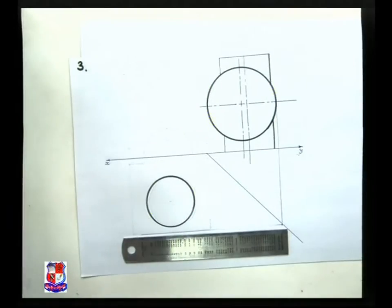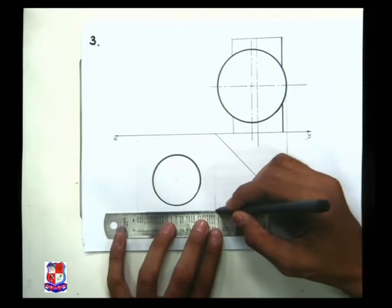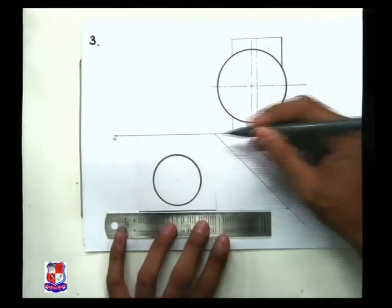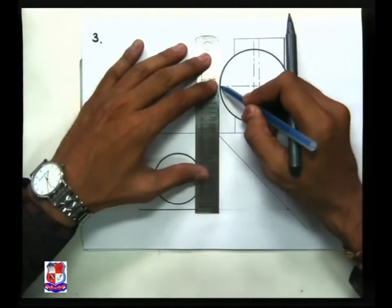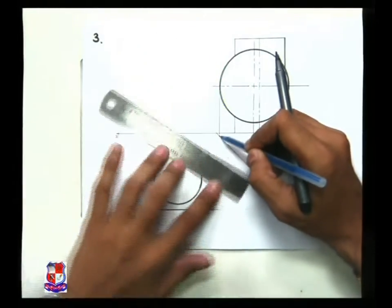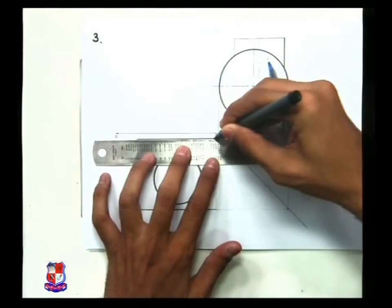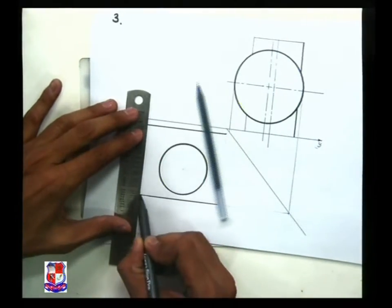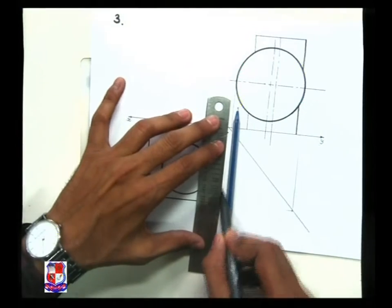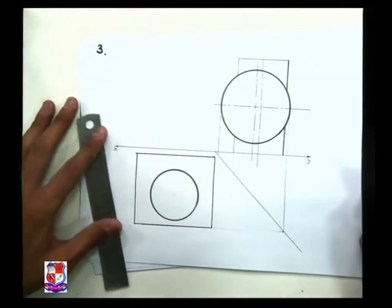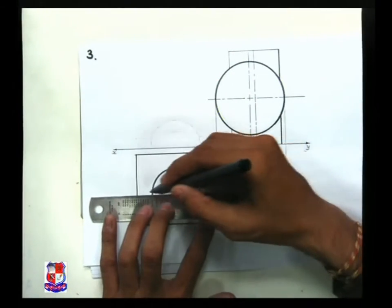And we can draw the top view of the penetrating cylinder — it would be a rectangle. Similarly, vertical lines and horizontal lines from here give us the top view of this cylinder. The length of the cylinder, if not given, we can select any convenient length. The distance between the axes of both cylinders is 5 millimeters.